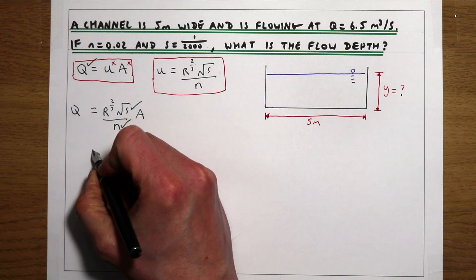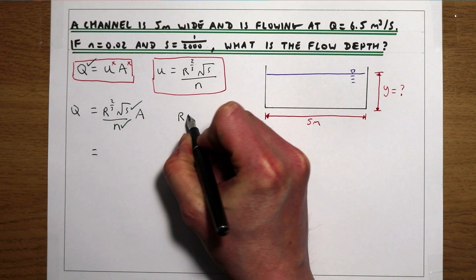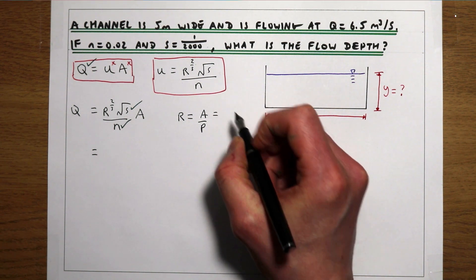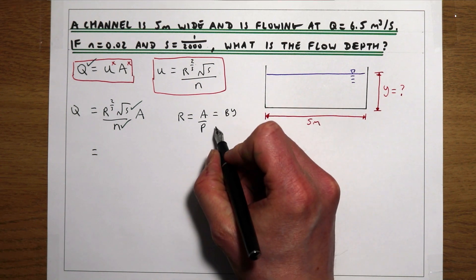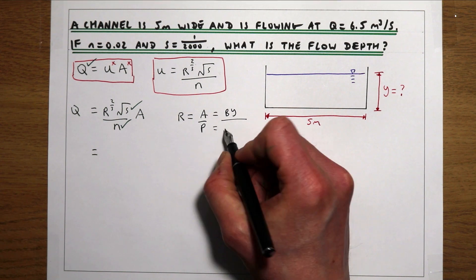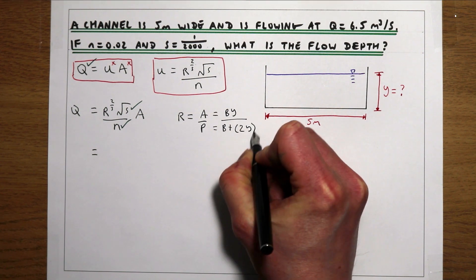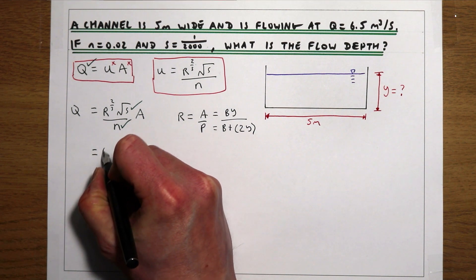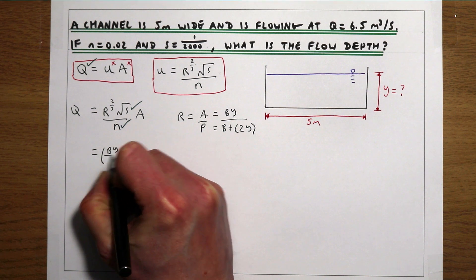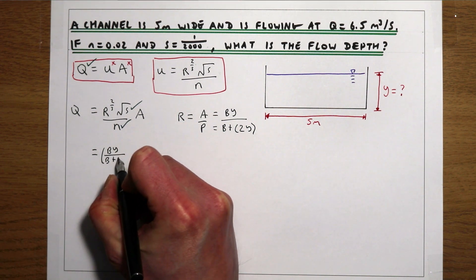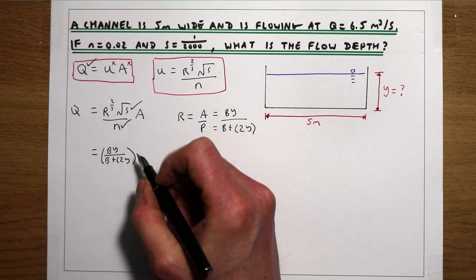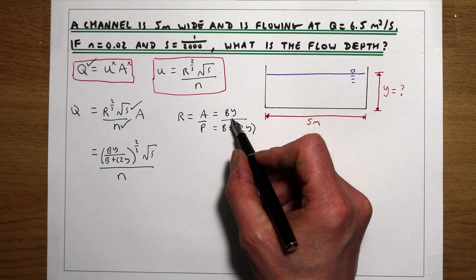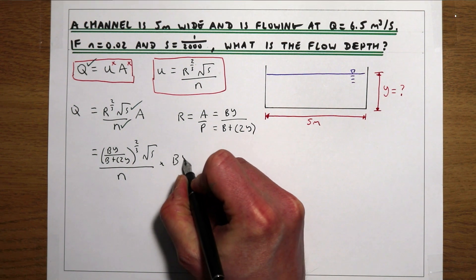The hydraulic radius of our channel is the area of the channel over the wetted perimeter. The area is the base of the channel times the flow depth, and the wetted perimeter is the base of the channel plus 2 times the flow depth. So if we plug that back in where R is, we get the hydraulic radius as (B × Y) / (B + 2Y) to the power of 2/3, times √(S/N), and then the area is again just the width of the channel times the flow depth.